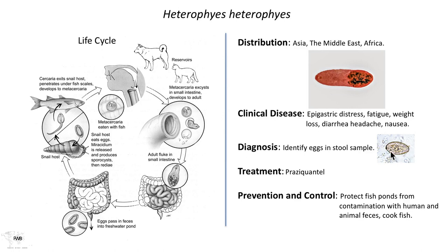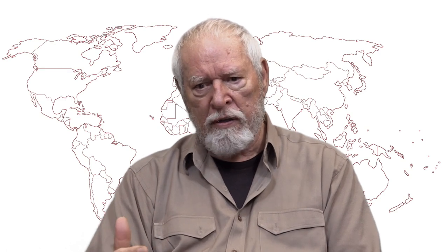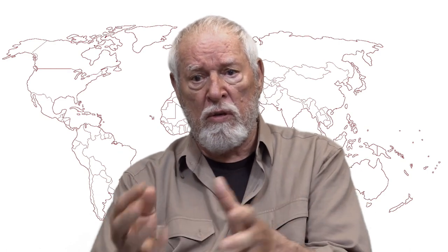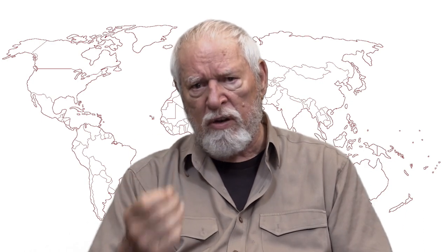Diagnosing the infection requires finding the egg in the stool. This egg very closely resembles that of Clonorchis, so a really skilled technician is needed to make the distinction. However, the treatment is the same — if they misdiagnose Heterophyes heterophyes as Clonorchis and treat with praziquantel, you would end up with the same good result. Preventing and controlling this requires preventing human feces from coming in contact with aquaculture situations. That's easier said than done, and it's very important to be able to describe this infection to someone working in that situation to demonstrate their role in the transmission cycle.